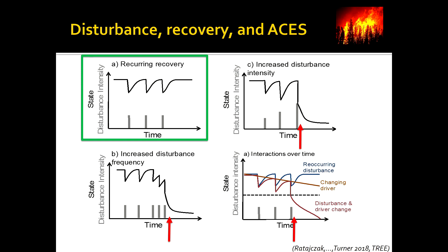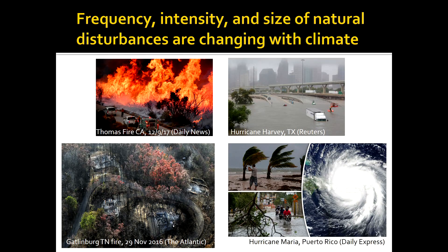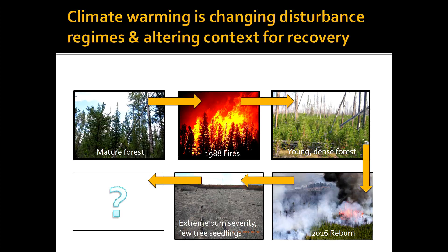Disturbances interacting with a gradual change, such as the change we're seeing in climate or the changes in variability of climate, can also lead to an abrupt change. In the news, both in the United States and globally, we are already seeing that the frequency, the intensity, and the size of natural disturbance events are changing, and climate is implicated — whether it's the changing fire regimes, the occurrence of fire in places to which it's not adapted, floods and hurricanes that need another category, or fires that need another category of intensity.